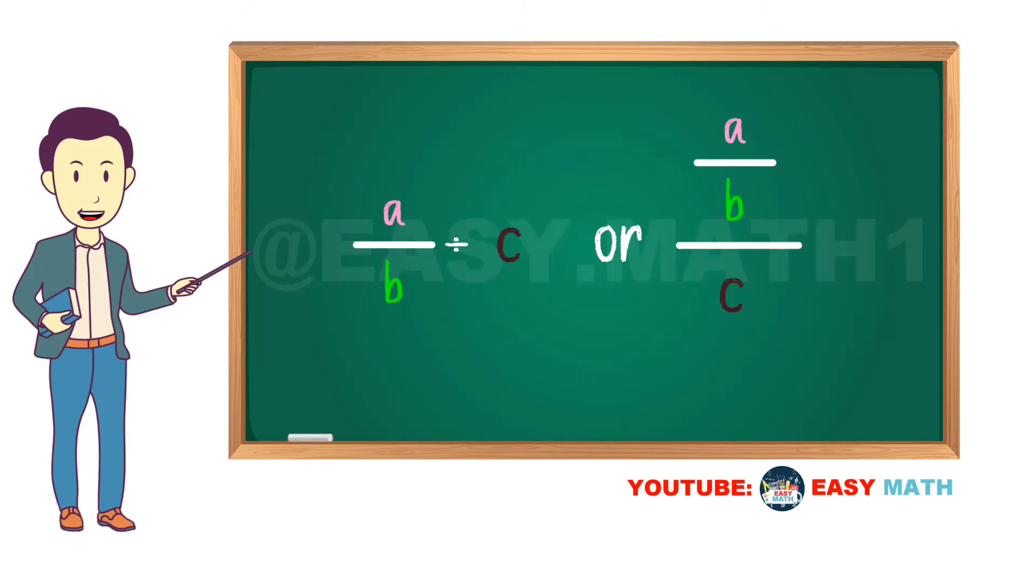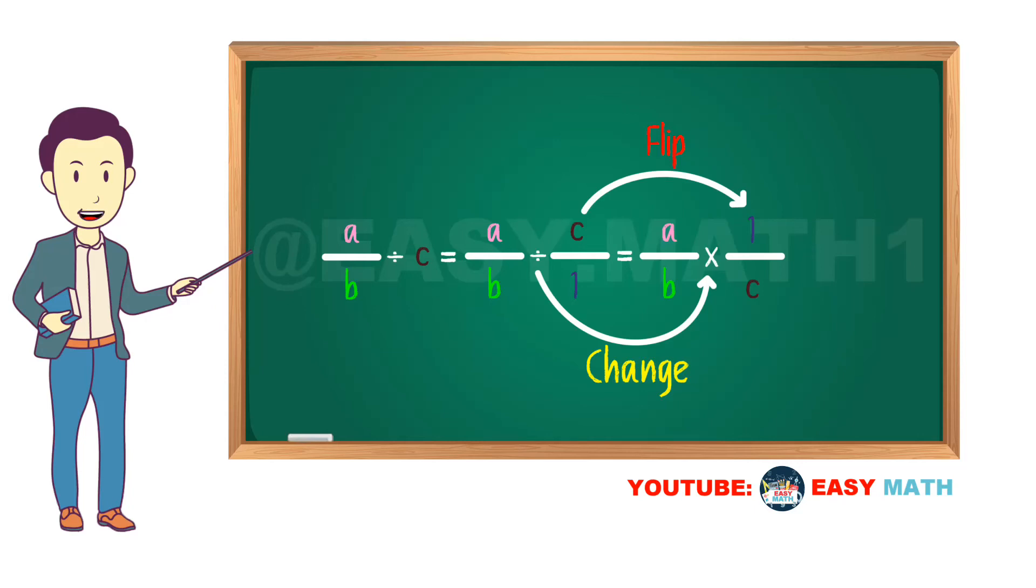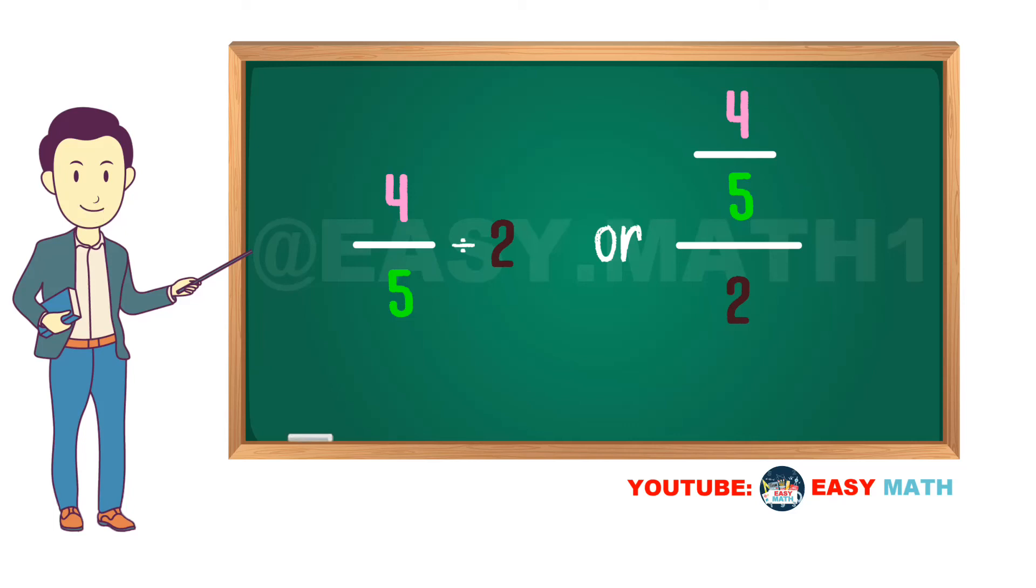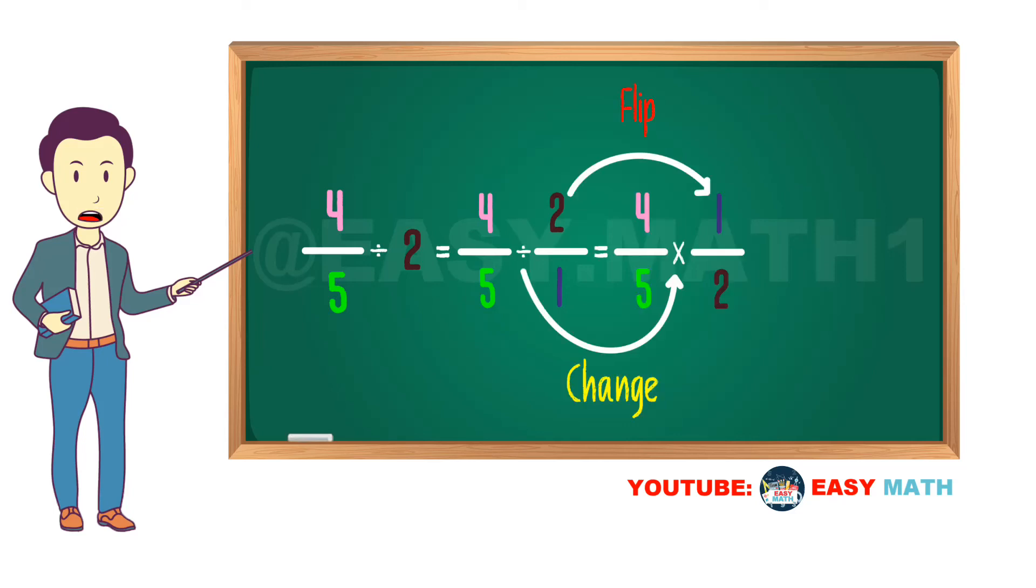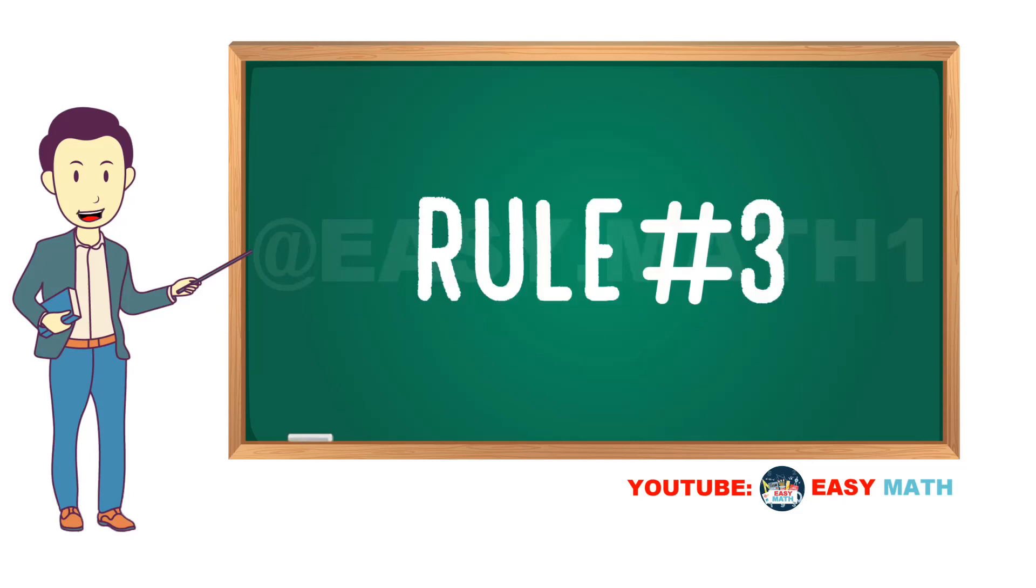Rule number two: A over B divided by C is equal to A over B divided by C over 1 equals A over B times 1 over C equals A over BC. For example, 4 over 5 divided by 2 equals 4 over 5 times 1 over 2 equals 4 over 10, which simplifies to 2 over 5.